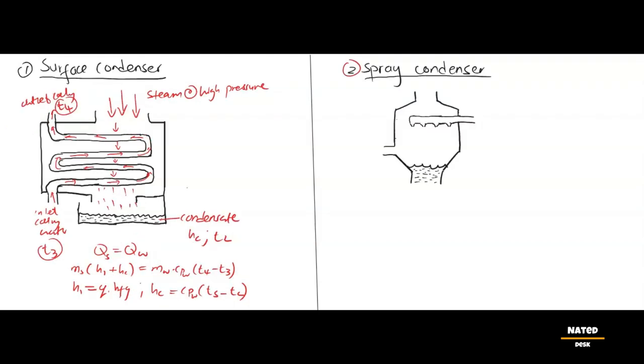Note. The equation here will be applicable when answering surface condenser questions. To answer questions about spray condensers, you need to note the following. Since the condensate mixes with cooling water and gets collected as one liquid, we will not have heat enthalpy of the condensate hc. In other words, we will take hc as zero.